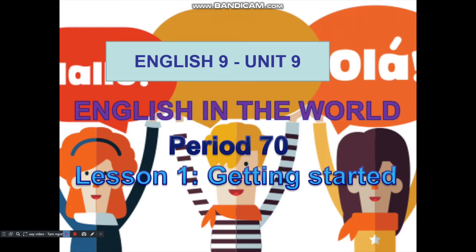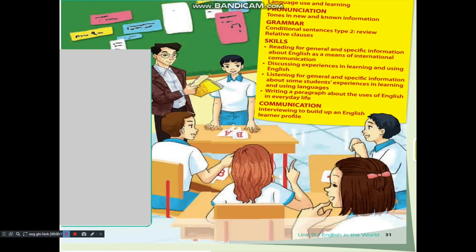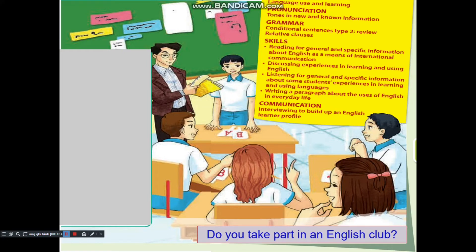Hello everyone, today we're going to study English 9, Unit 9: English in the World. Now let's get to Lesson 1, Getting Started. Let's look at a picture. As you can see, V and Jung and their friends are discussing with the teacher about English, the most important language in the world. Do you also take part in an English club? What do you think is special about the club?